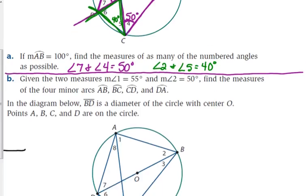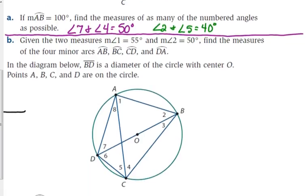So let's look at part B. We have some different information. Part B resets the problem. I've got another copy of the picture with nothing on it. Same setup, but AB is no longer 100 degrees. If we know that the measure of angle 1 is 55 degrees, and the measure of angle 2 is 50 degrees, find the measures of the four minor arcs, AB, BC, CD, and DA. Which one do you want to give me first?